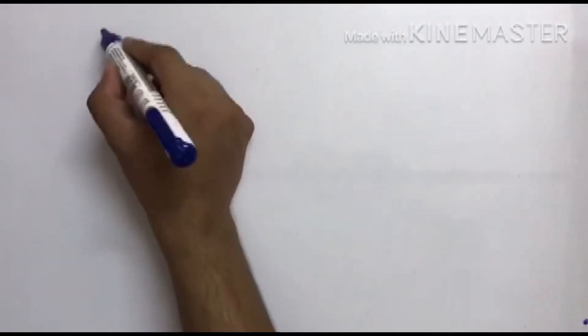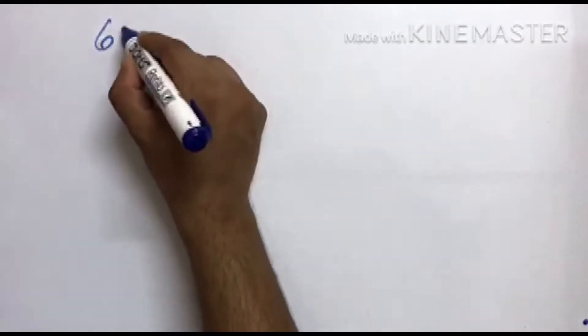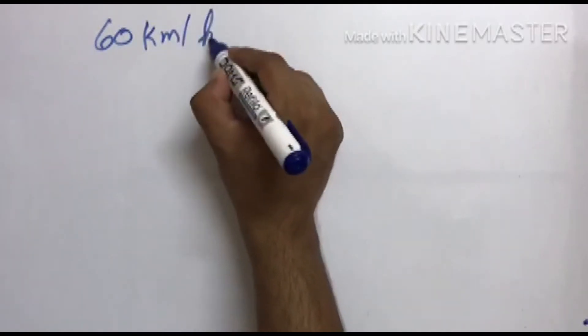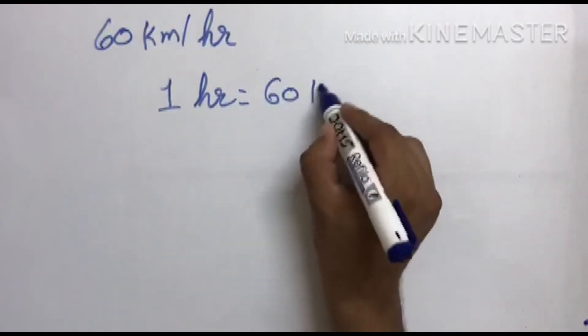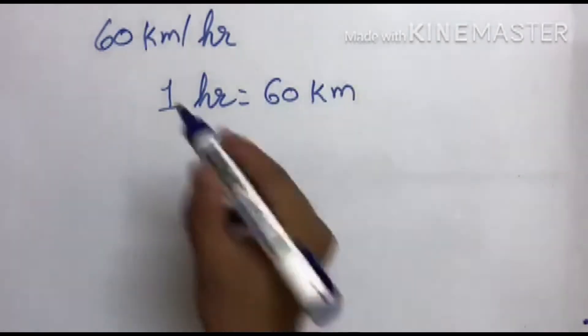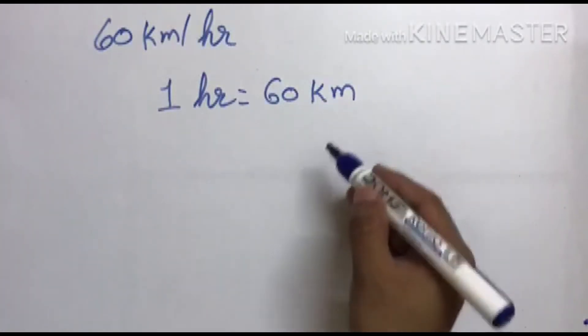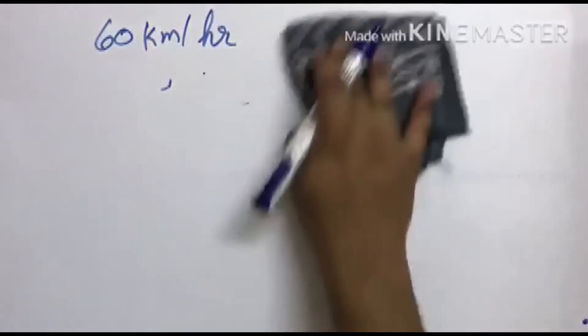Now next question. A bus started its journey and reached different places with a speed of 60 km per hour. इसका मतलब: one hour में वह कितने km travel करता है? 60 km. 60 km per hour का मतलब है कि एक घंटे में वह 60 km जाता है। Understood. The journey is shown in the figure alongside.